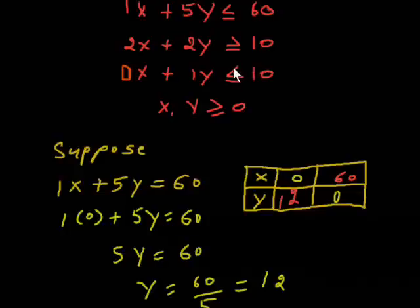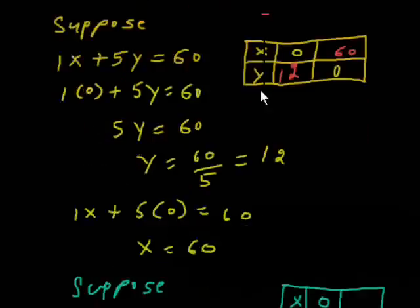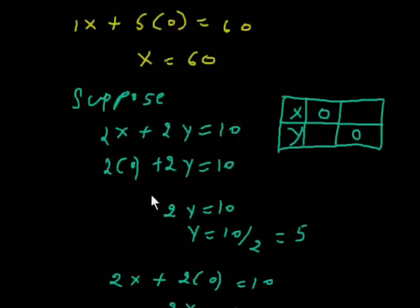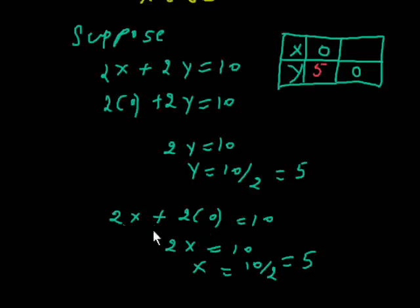Now I am taking a second equation 2x plus 2y more than equal to 10. Suppose 2x plus 2y equals 10. Suppose x is 0, so I am putting the value of x as 0, then y is equal to 5. And if y is 0, then x equals 5. This value of x I am taking in second column.